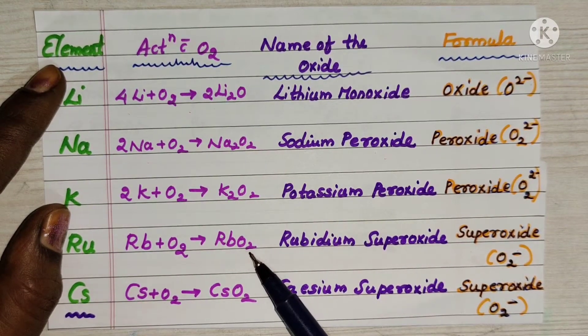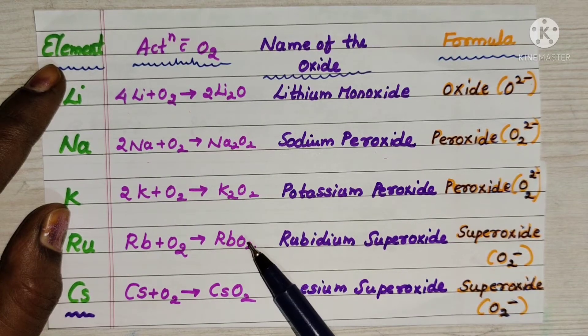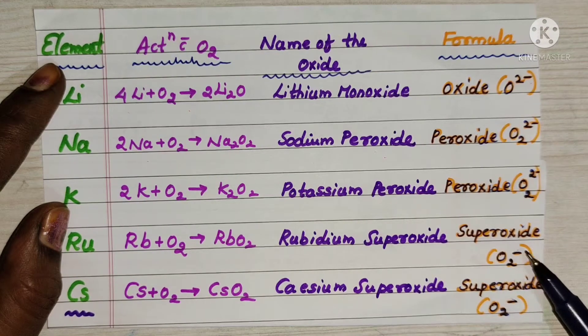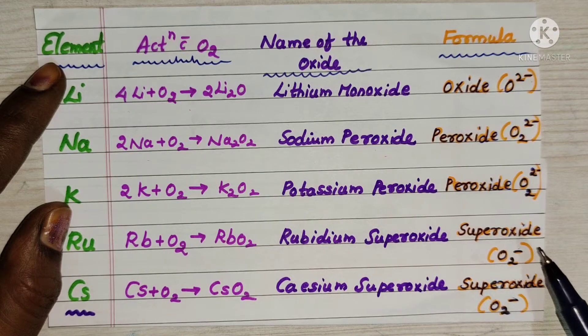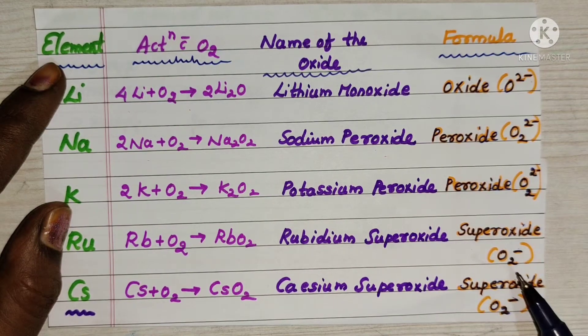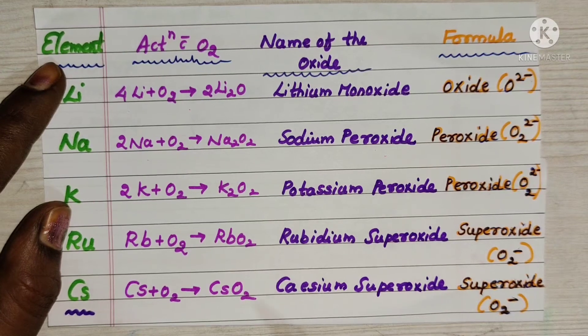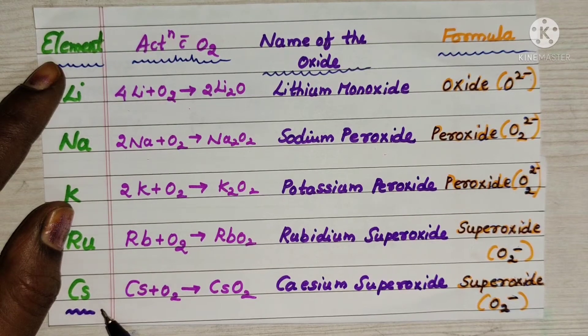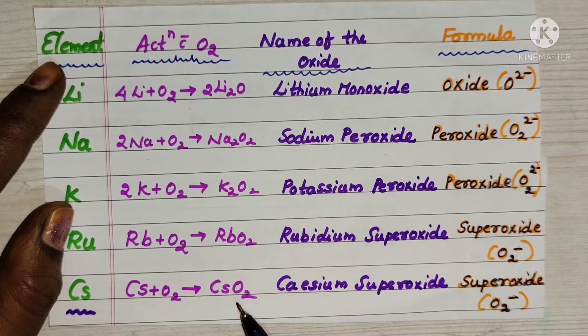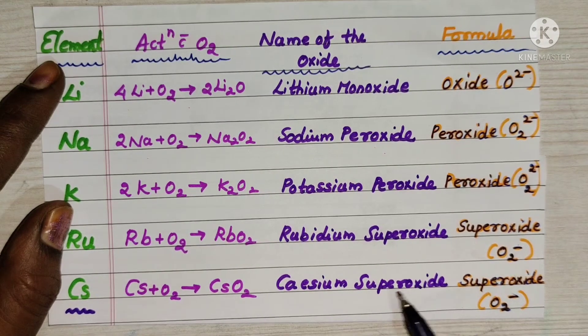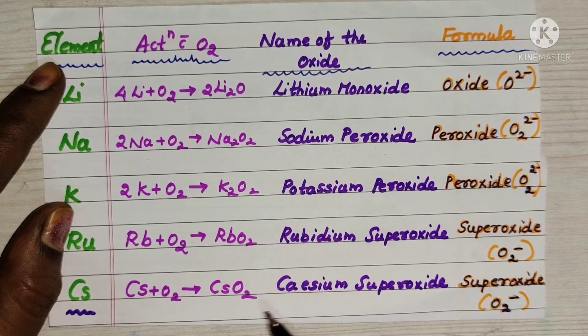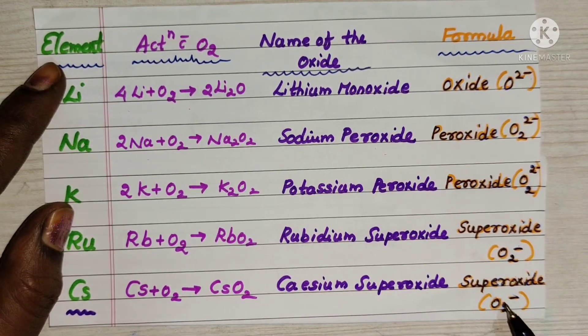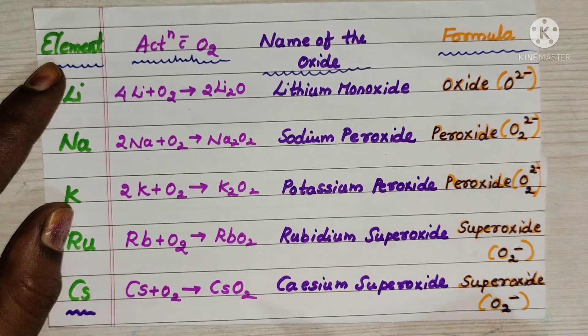Rubidium plus O2 gives rubidium superoxide. Superoxide formula is O2 power minus. Oxygen will be minus 2 charge in oxide, but superoxide will be minus charge. Cesium when reacts with oxygen forms cesium superoxide CsO2. Because here O2 charge is minus. Superoxide formula is O2 power minus.